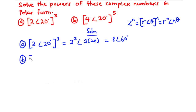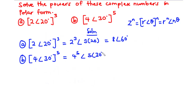For b, we have 4 polar 30 degrees all exponent 5. This becomes 4 exponent 5 polar 5 times 30. 4 exponent 5 gives 1024, polar 5 times 30, which is 150 degrees. So the answer is 1024 polar 150 degrees. This is how to solve the powers of complex numbers.